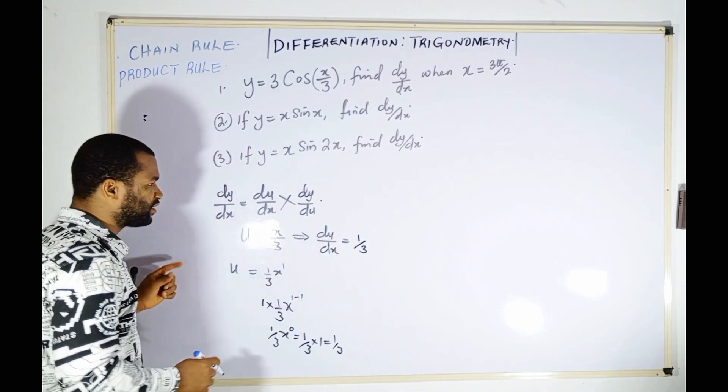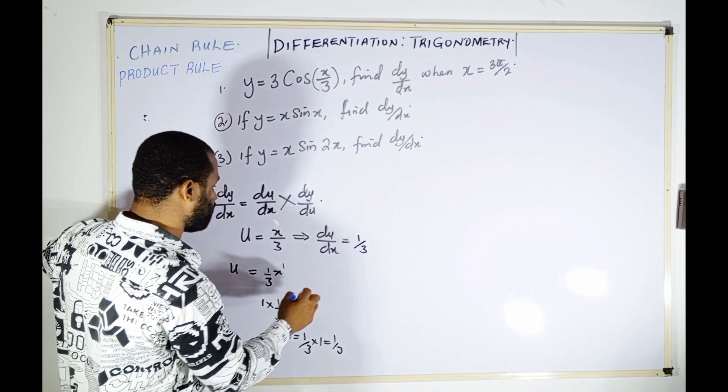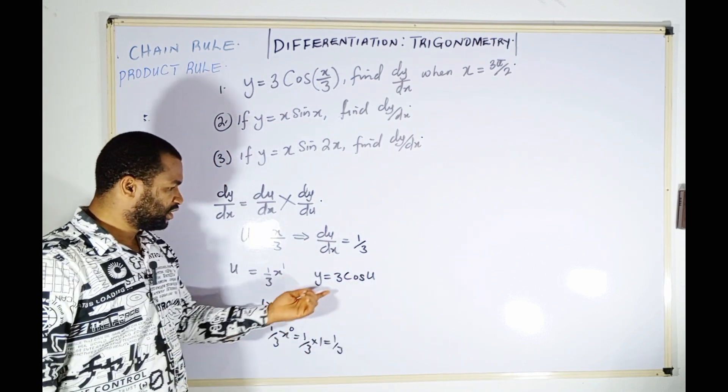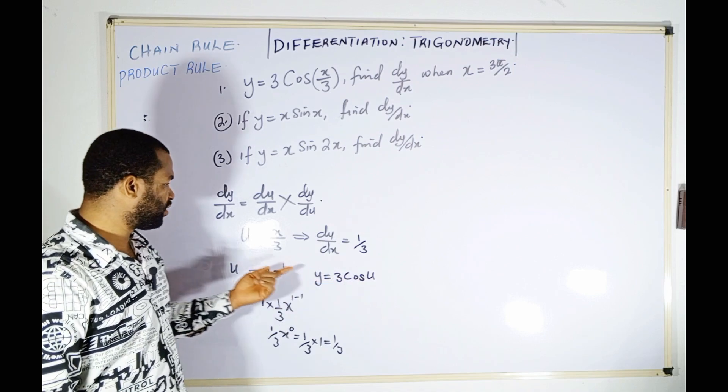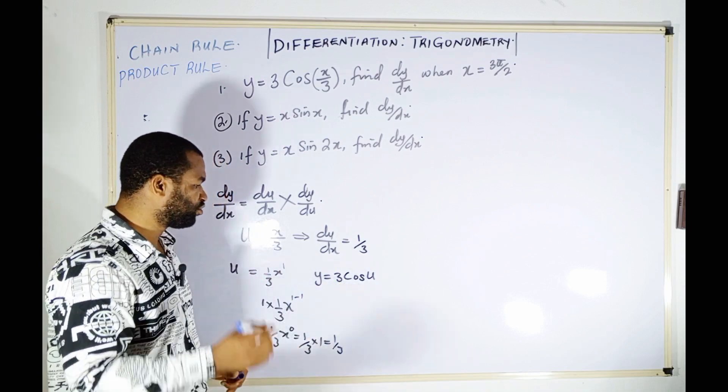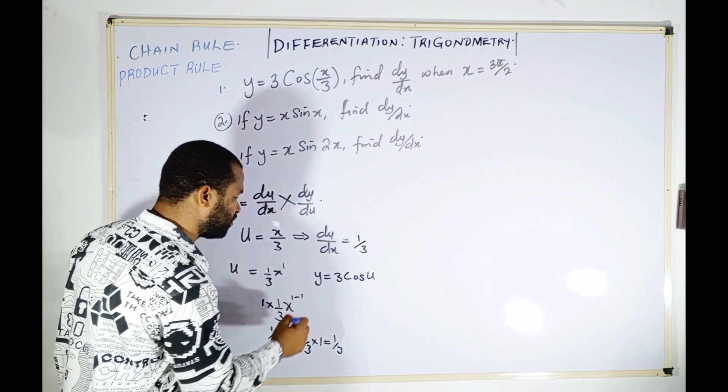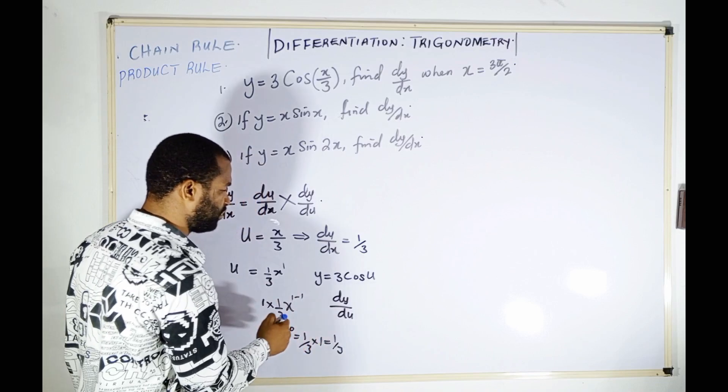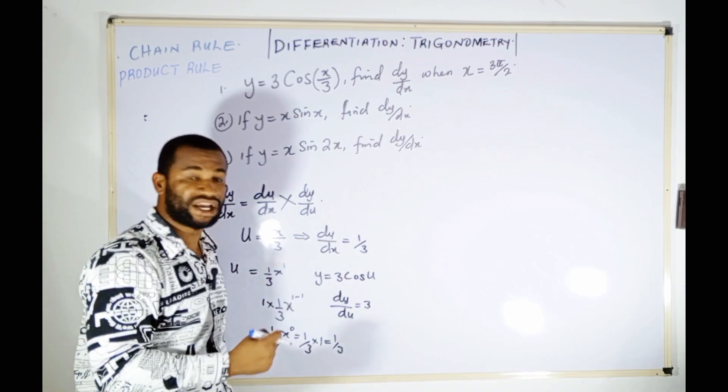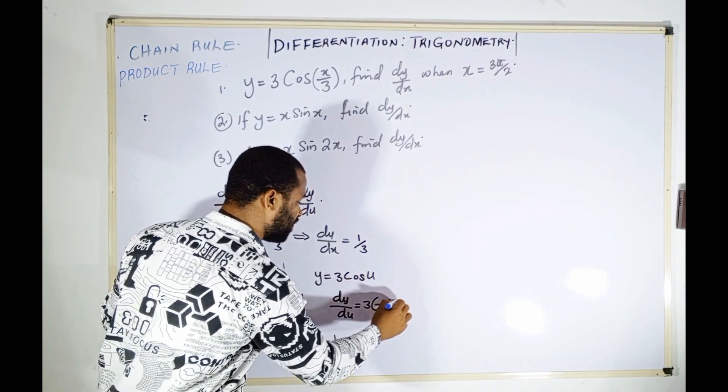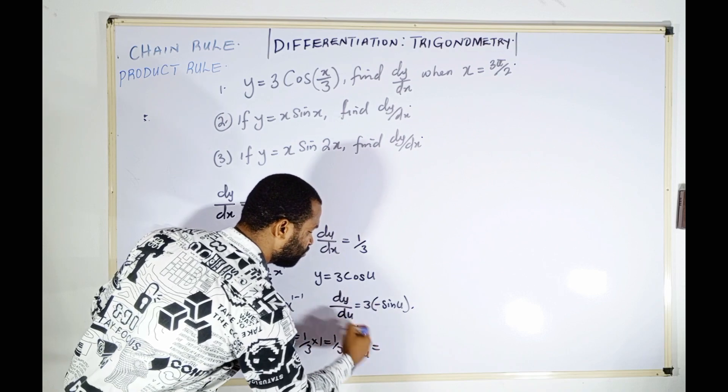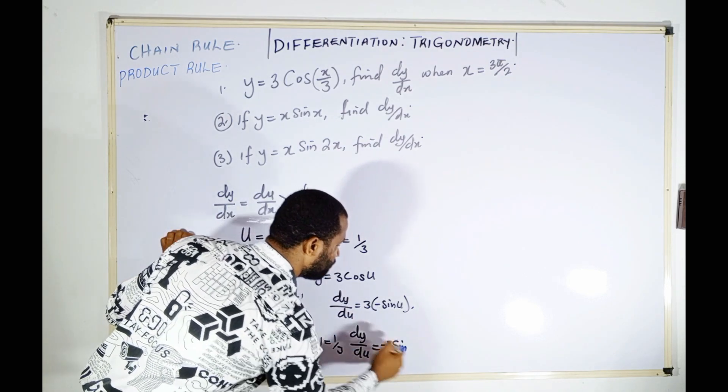Now let y = 3cos(u). The constant 3 remains. Differentiating cosine gives minus sine, so dy/du = -3sin(u), which is the same as -3sin(x/3).